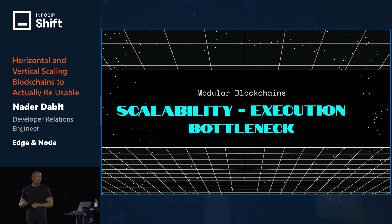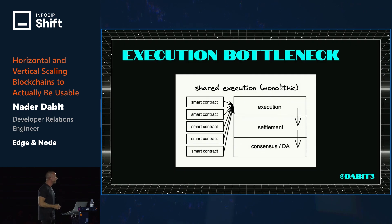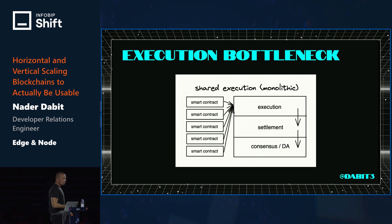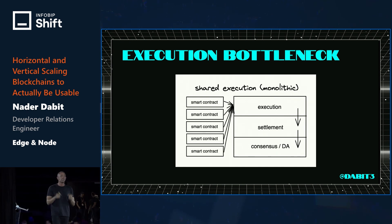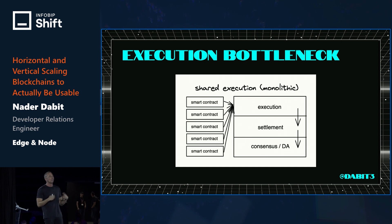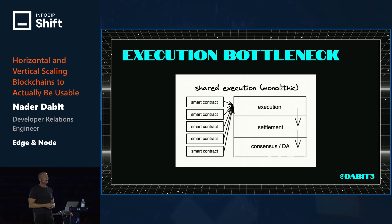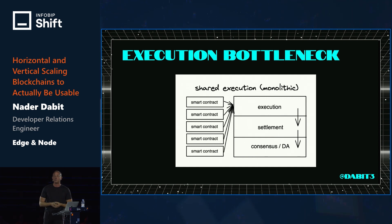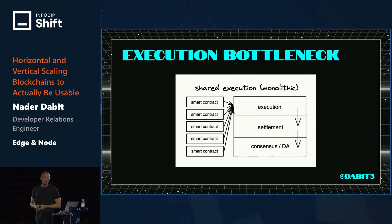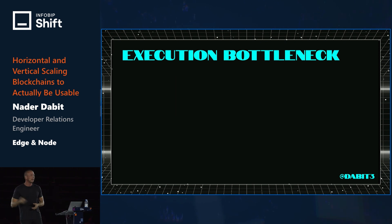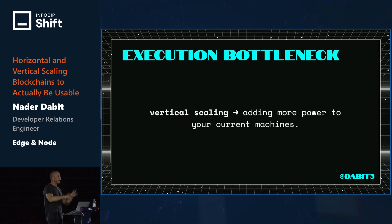Another thing this helps solve is the execution bottleneck. Most blockchains share a single execution environment with every other application and every user. This does not scale — we have a finite amount of resources, and we're telling people they need to share that execution environment with everyone else. That doesn't make sense for actual massive scale.